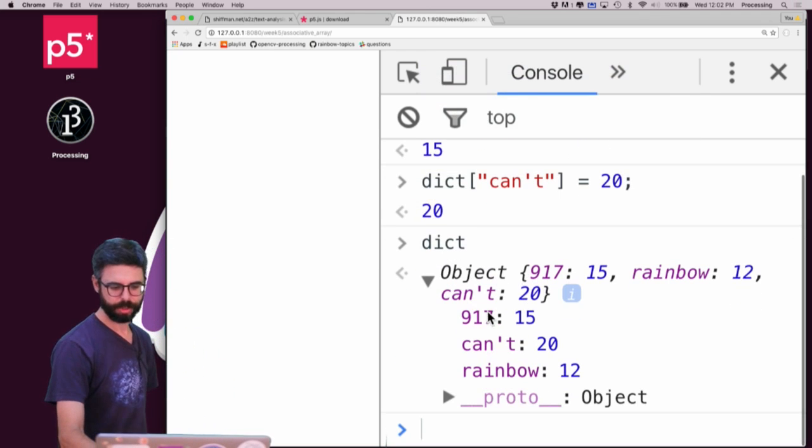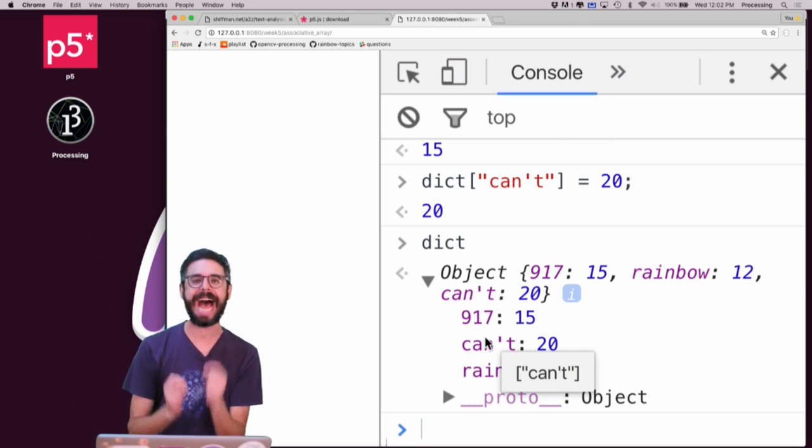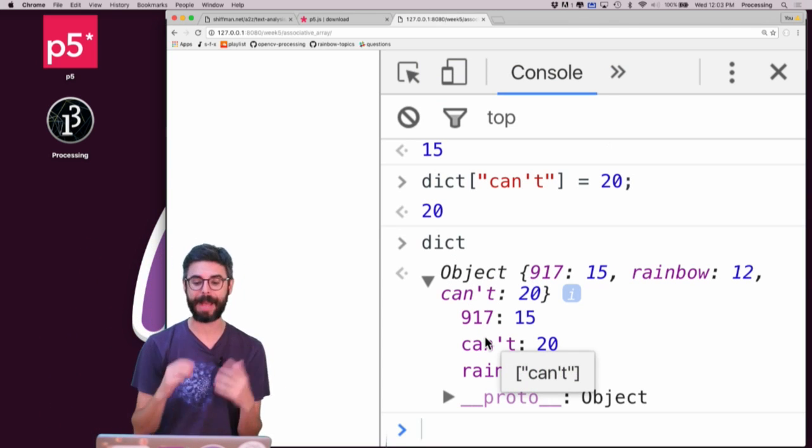And now let's look at the dictionary. And you can see, look what it's got. It's got 917 and it's got can't in it. So you can see here that it's able to keep those as names of the properties if I pass them in on a string.